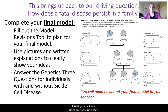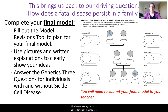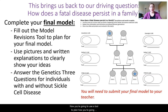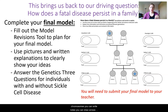This brings us back to our driving question: how can a fatal disease persist in a family? You may need to submit your final model to your teacher — check with your teacher about that. What we're asking you to do now is fill out the model revision tool to plan your final model. You did an initial model at the beginning of this unit. Now you'll use the tool to plan how to add and change the model to reflect what you've learned. You can use pictures and written explanations — draw chromosomes, write notes, draw arrows — whatever helps you express what you know.